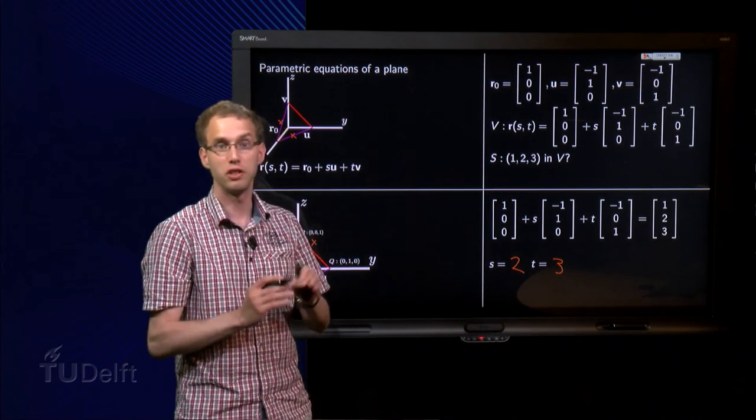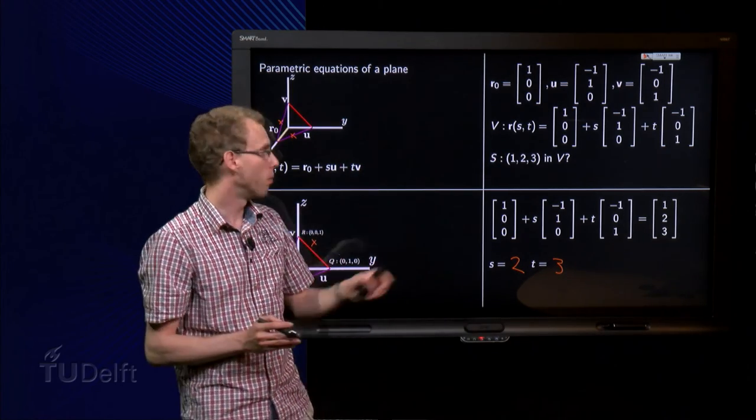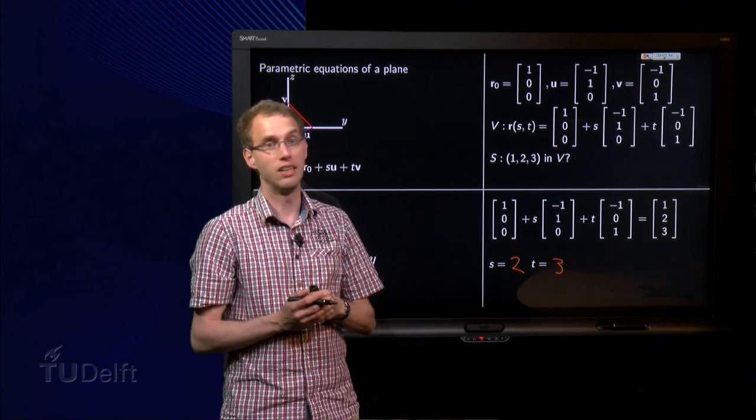That means that we cannot find values of s and t such that R of s and t is 1,2,3, which means that this point is not in the plane V.